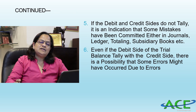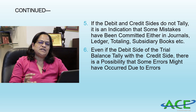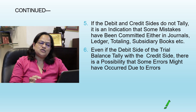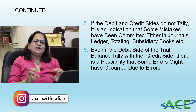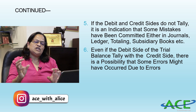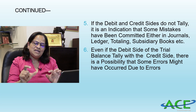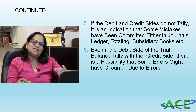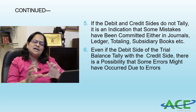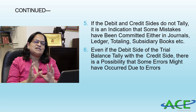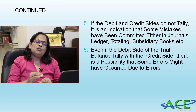If the debit side and credit side do not tally, it is an indication that some mistakes have been committed — either in the journal, in the ledger, in totaling subsidiary books, or in carry-forward. When we prepare and find some difference in the trial balance, we check whether it is a journal entry error or a ledger balance error, and we try our level best to match the trial balance.